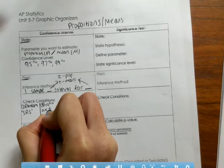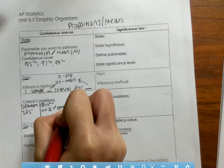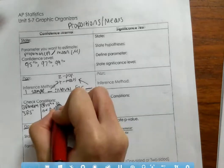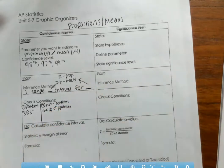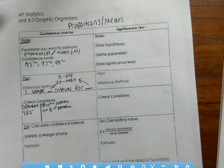The 10% condition is used to show independence. If we sample without replacement, we cannot consider that sample independent — but if we meet the 10% condition, we meet the exception and can use our formulas. If the problem tells you that it's an independent sample, then you don't need to use the 10% condition.